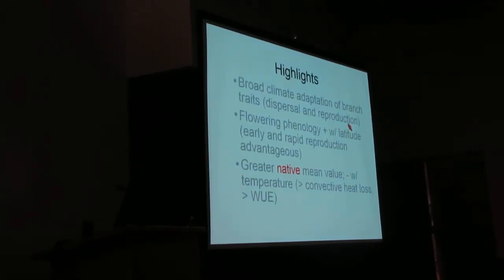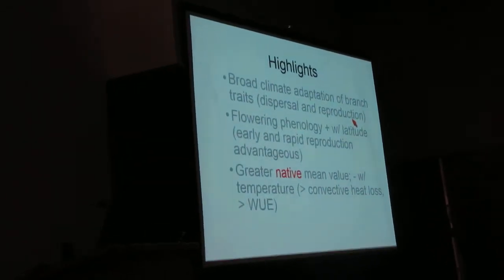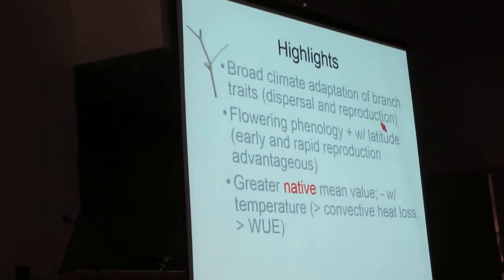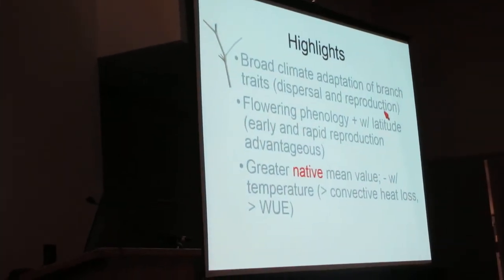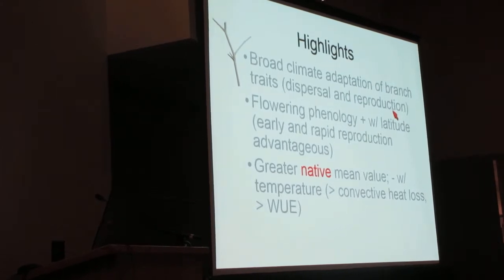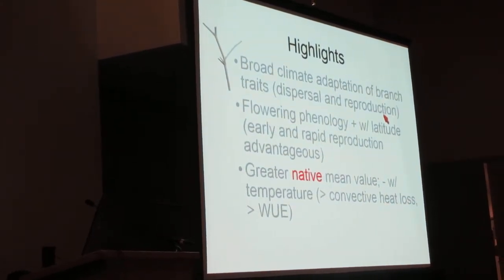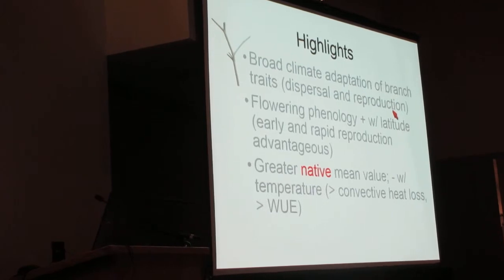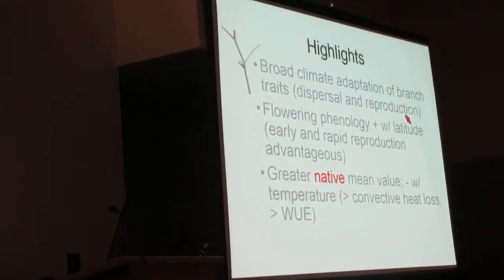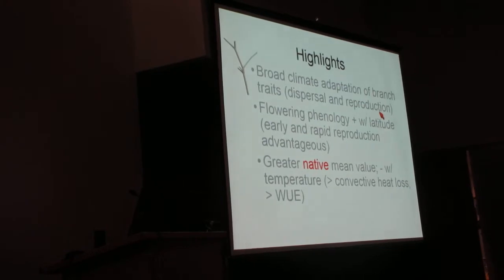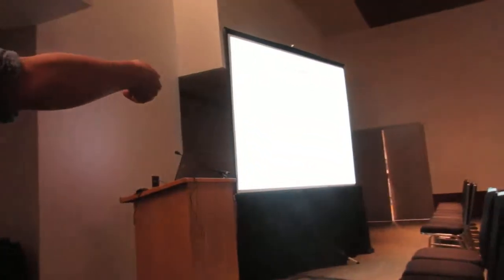To highlight my results, there's really broad climate adaptation for branch traits, and I think this is due to the fact that it's really important for its dispersal and reproduction—it grows as a tumbleweed. Its mode of seed dispersal is rolling in the desert. Each branch is actually an actual inflorescence, so it holds all the flowers and the fruits.